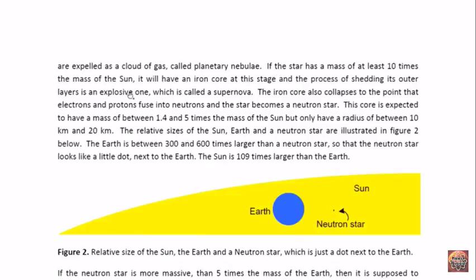If the star has a mass of at least 10 times the mass of the Sun, it will have an iron core at this stage. And the process of shedding its outer layers is an explosive one, which means it's what's called a supernova. The iron core then collapses to the point that electrons and protons fuse into neutrons and the star becomes a neutron star. This star is expected to have a mass of between 1.4 and 5 times the mass of the Sun. That's because the rest of the mass was expelled and became a cloud around the core of the star. But it will only have a radius which is between 10 and 20 kilometers, so it's tiny.